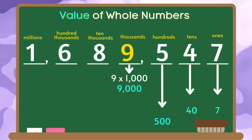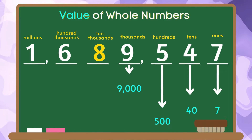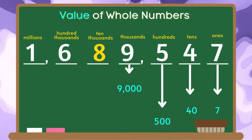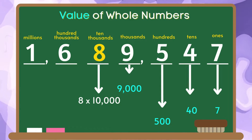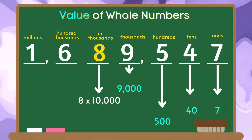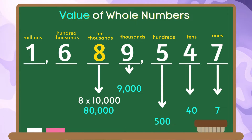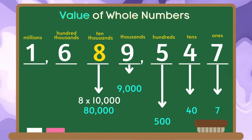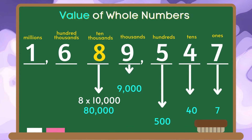The place value of the digit 8 is ten thousands. We are going to multiply digit 8 by 10,000. 8 times 10,000 is equal to 80,000. Therefore, the value of the digit 8 is 80,000.